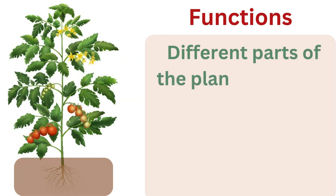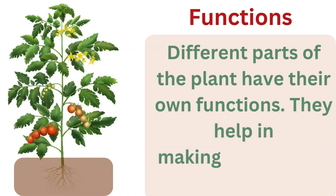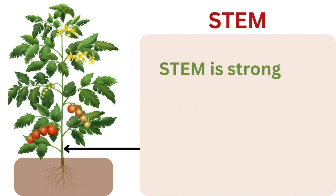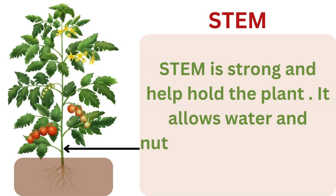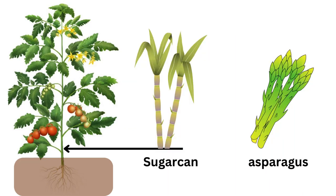Different parts of the plant have their own functions. They help in making and distributing food. The stem is strong and helps hold the plant. It allows water and nutrients to flow up to the leaves. Some examples of stems we eat are sugar cane and asparagus.